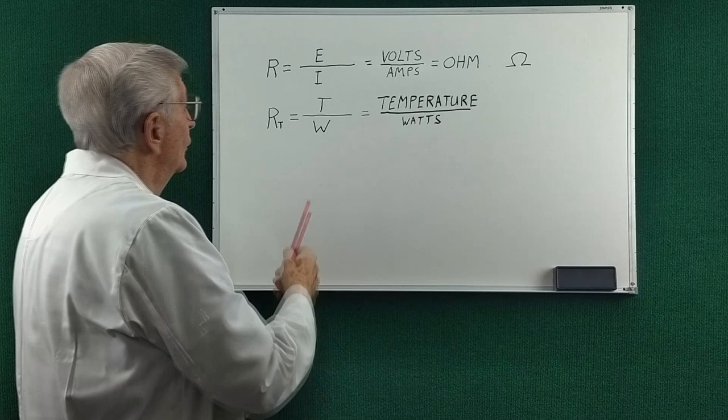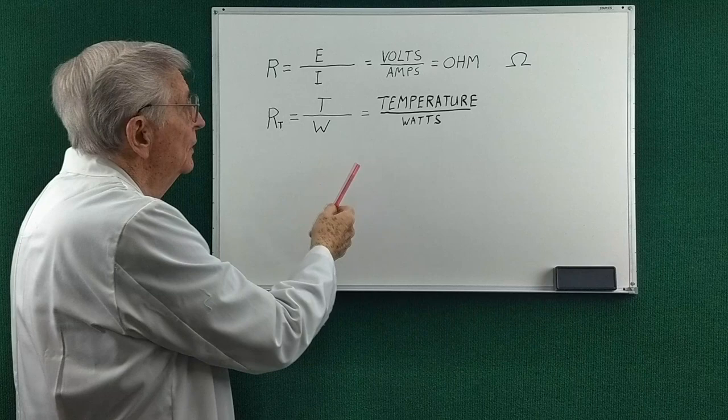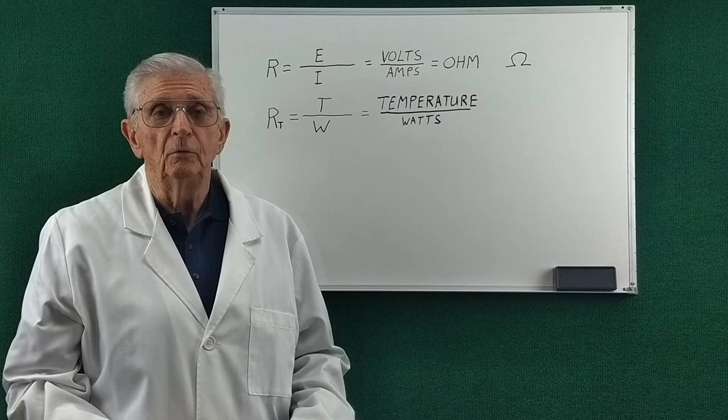In the thermal world, the thermal resistance is T over W as temperature over watts and there's no special name for it or symbol. So that's about it. So back to engineering Jim.